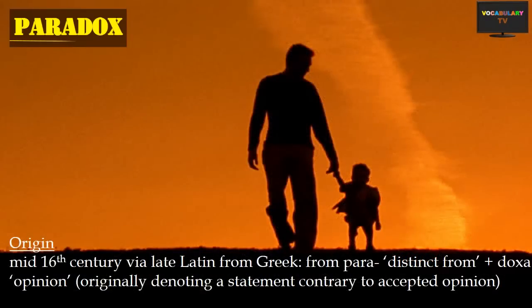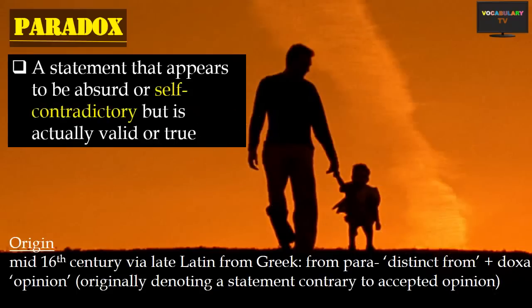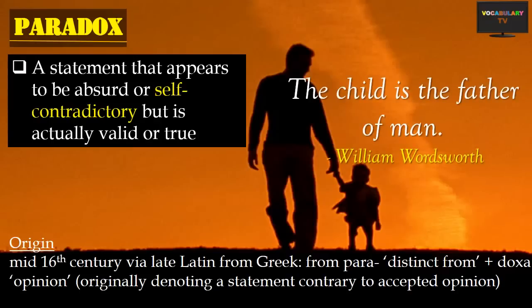The second figure of speech is a paradox — a statement that appears to be absurd or self-contradictory but is actually valid or true. For instance, take the popular saying 'the child is the father of the man,' credited to William Wordsworth. On first look it seems puzzling, but on deeper reflection we see the truth: childhood habits and experiences become the basis for adult life and shape the grown-up person. So 'child is father of the man' is a paradox with a profound hidden meaning.